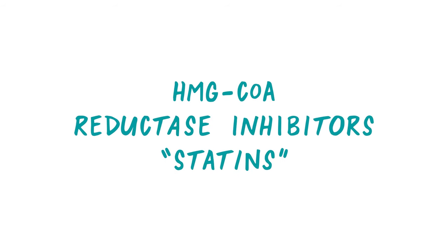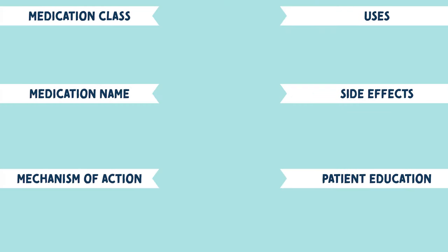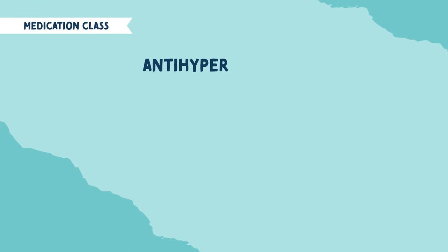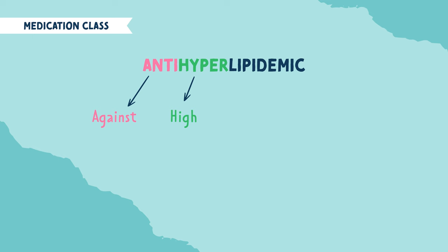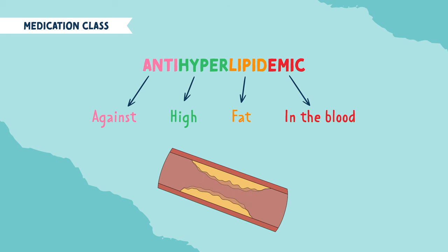Let's talk about HMG-CoA reductase inhibitors, also known as statins. Statins fall under the medication class called anti-hyperlipidemic drugs. If you break apart this word: anti means against, hyper means high, lipid means fat, and emic means in the blood. So when we put that together, it means they help to lower fat levels in the blood.